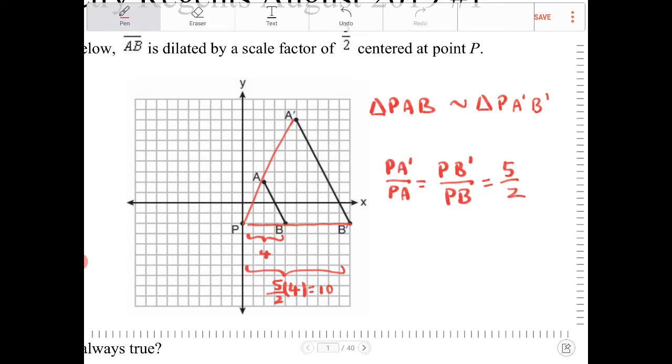Those two sides are proportional, and we have that angle there that is being shared by both triangles. So angle P is congruent to angle P. Therefore, we can say that these two triangles are similar because of a side-angle-side similarity.